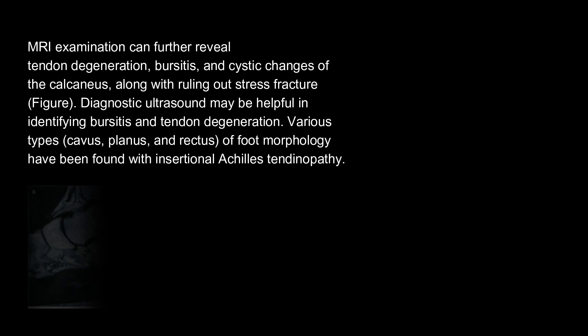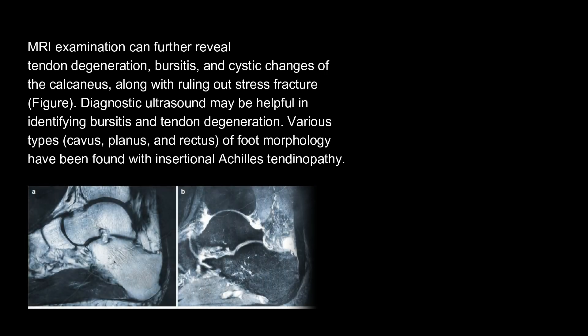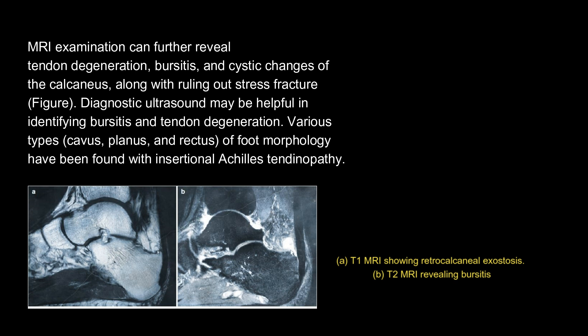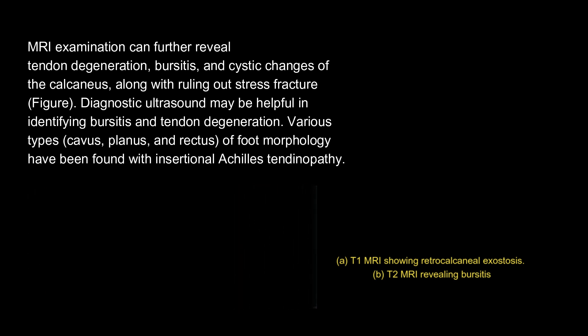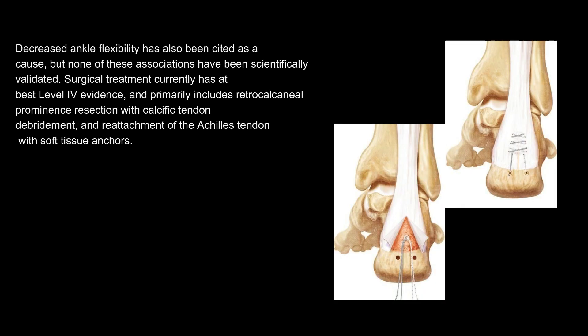MRI examination can further reveal tendon degeneration, bursitis, and cystic changes of the calcaneus, along with ruling out stress fracture. Diagnostic ultrasound may be helpful in identifying bursitis and tendon degeneration. Various types — cavus, planus, and rectus — of foot morphology have been found with insertional Achilles tendinopathy. MRI views include: A. T1 MRI showing retrocalcaneal exostosis. B. T2 MRI revealing bursitis. Decreased ankle flexibility has also been cited as a cause, but none of these associations have been scientifically validated.